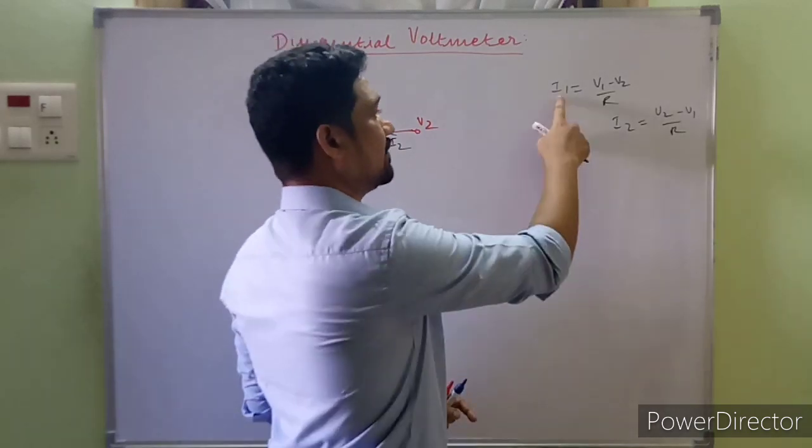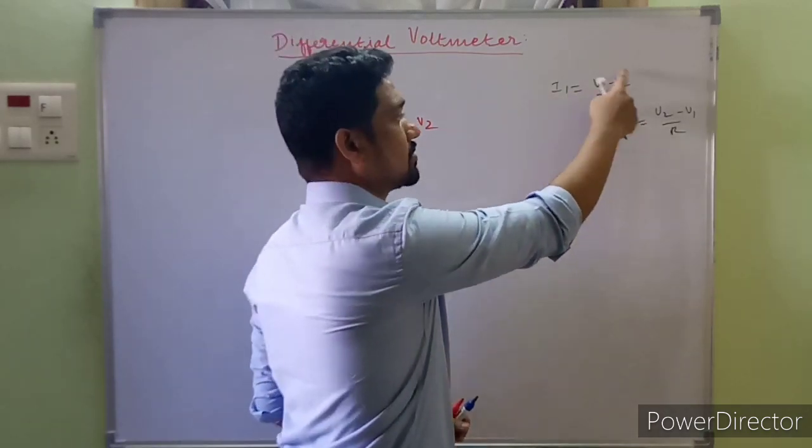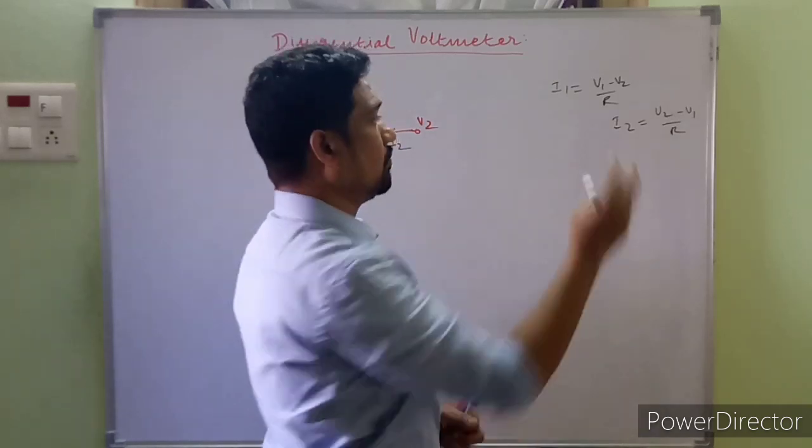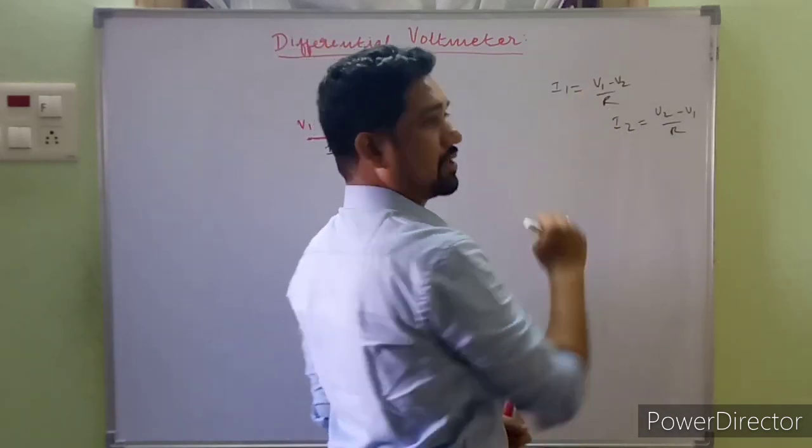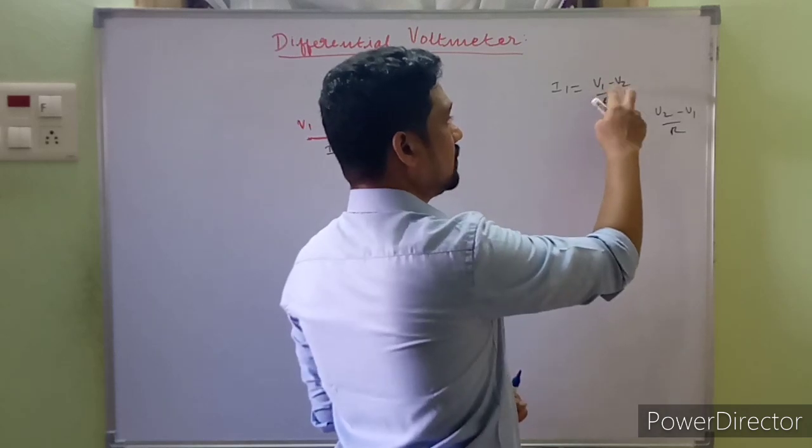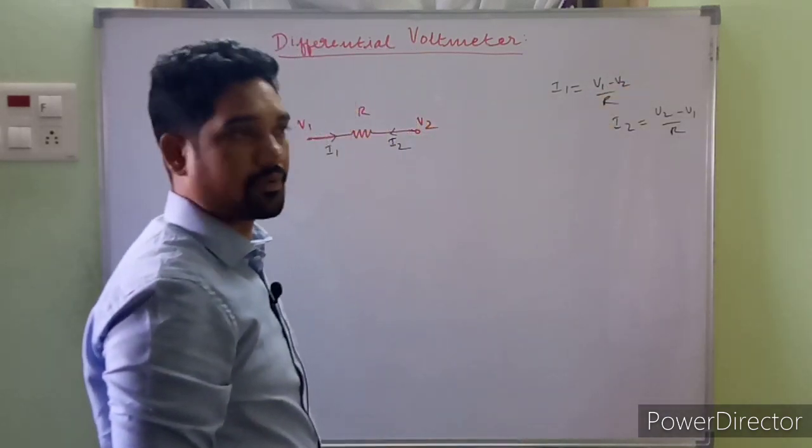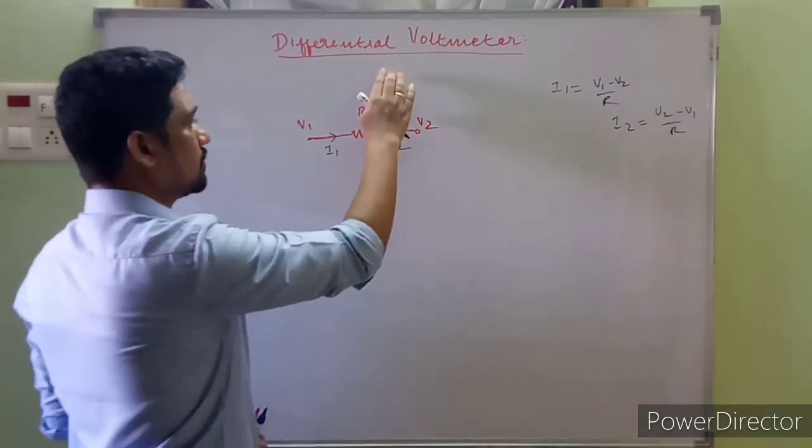So under what condition will I1 be zero? When the numerator of this ratio will be zero. Under what condition? When both the voltages are equal. When both voltages are equal, this gets cancelled and that becomes zero, making I1 zero. This is the basic principle of a differential voltmeter.